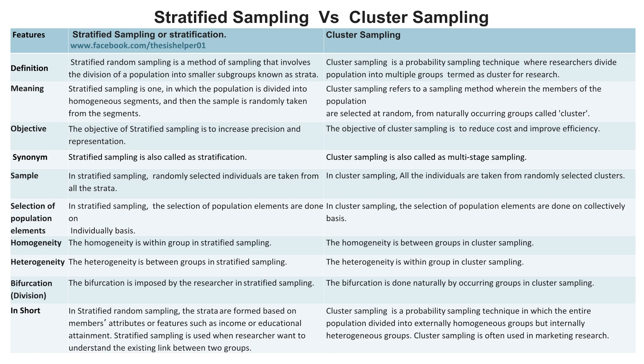The bifurcation is imposed by the researcher in stratified sampling, whereas the bifurcation is done naturally by occurring groups in cluster sampling.